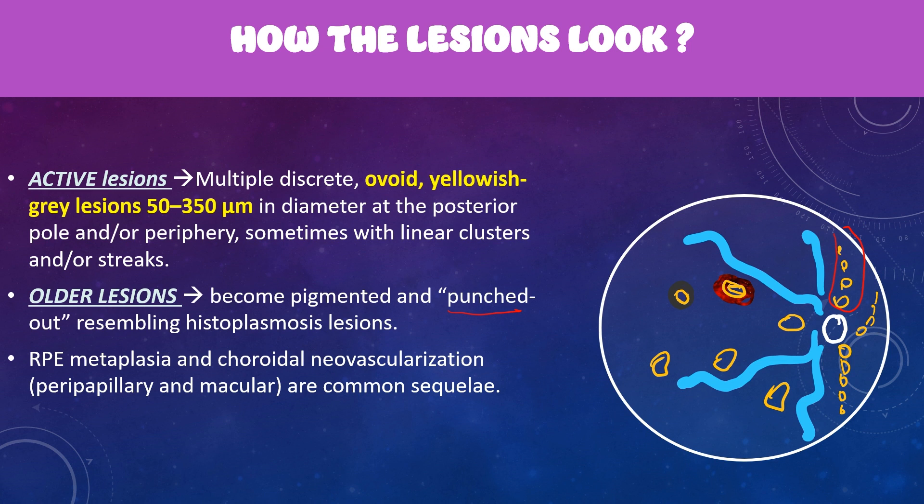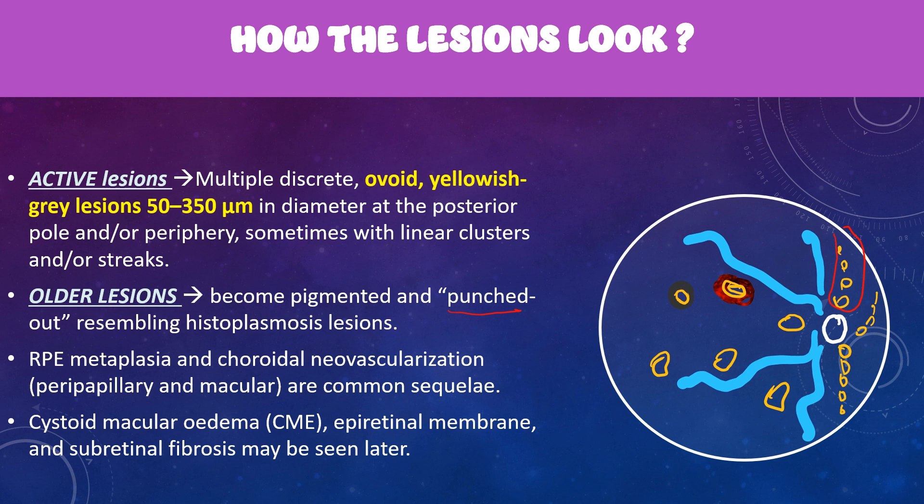The CNVM can be seen in the macular area and also in the peripapillary area around the optic disc. As inflammation becomes chronic, sequelae include cystoid macular edema, development of epiretinal membrane, and subretinal fibrosis.